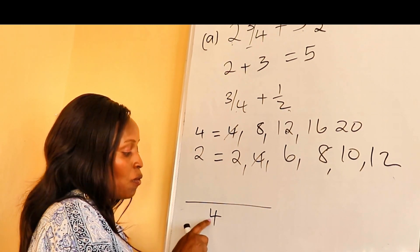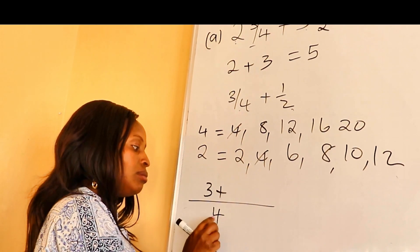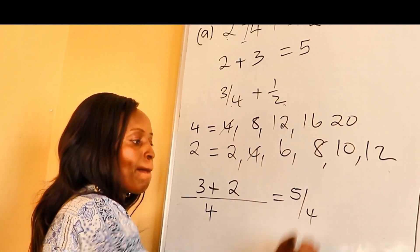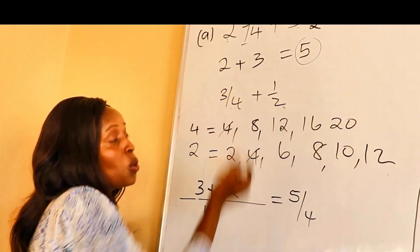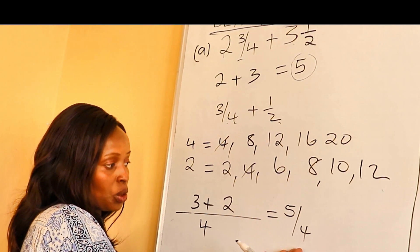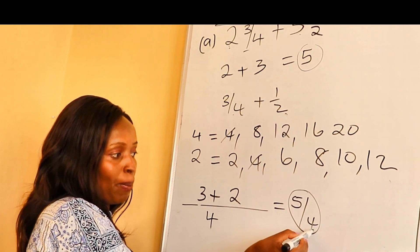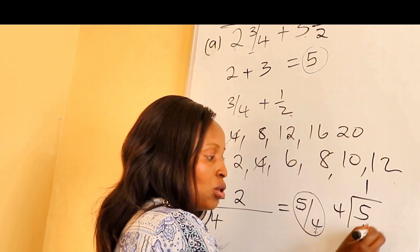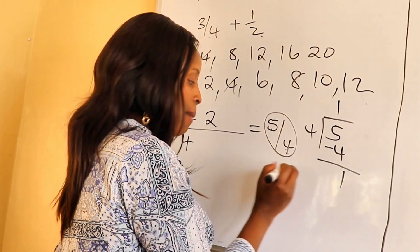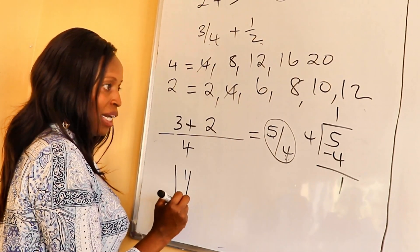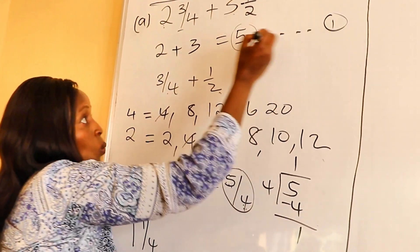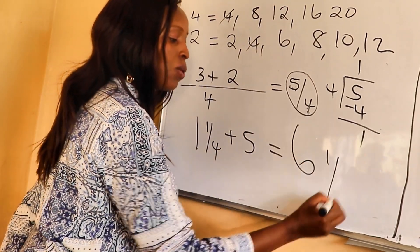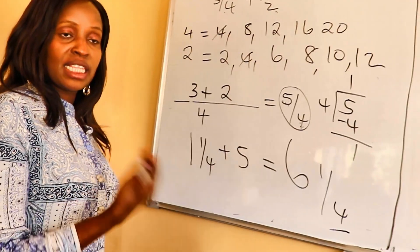Now we rename the fractions. Four divided by four is one, one times three is three. Four divided by two is two, two times one is two. We put together three and two: three plus two is five over four. But this fraction is improper since the numerator is bigger than the denominator, so we simplify: five divided by four is one remainder one, giving us one and one-quarter. Now we add the whole number: one plus five is six, so our answer is six and one quarter.